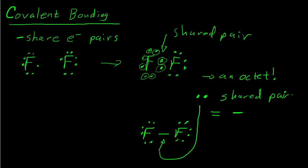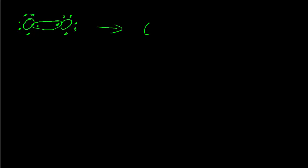Let's look at another example, this time between two oxygen atoms. Oxygen has six valence electrons, so there they are for each oxygen atom. Oxygen would like to gain two electrons so that it has eight. If it just shares one pair of electrons, we get a structure where each oxygen atom has closer to eight electrons, but still only seven electrons around each — so that's not a complete octet.